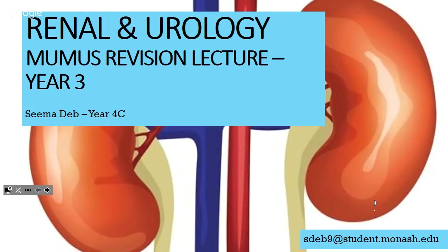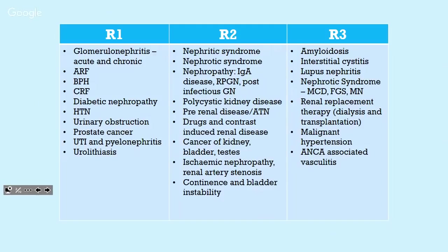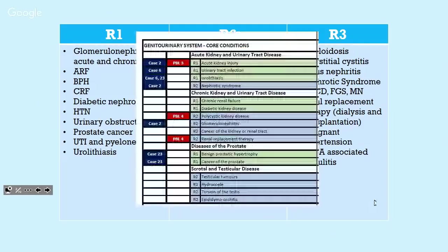I'm just going to go through renal neurology. In terms of the matrix, this is what we had and this is what you guys have. I'm going to go through the main topics, the buzzwords and the main things you need to know, and in terms of OSCEs, how to ask the questions you need to ask.